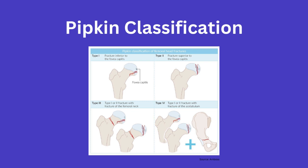For the next two types, they simply build upon the first two. For a Pipkin 3, you will have either a type 1 or a type 2 fracture with an associated femoral neck fracture. And for type 4, you will either have a type 1 or type 2 fracture with an associated acetabulum fracture.